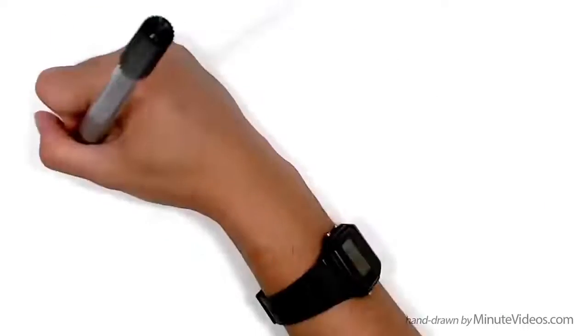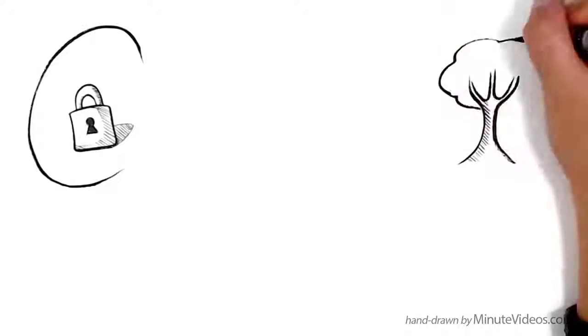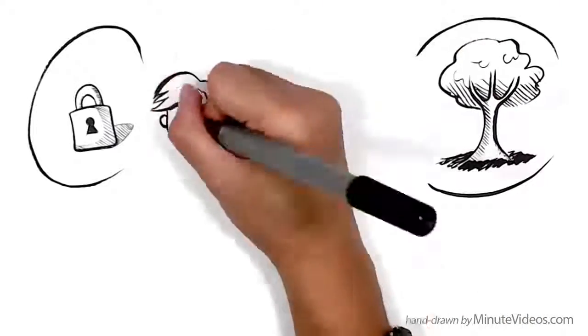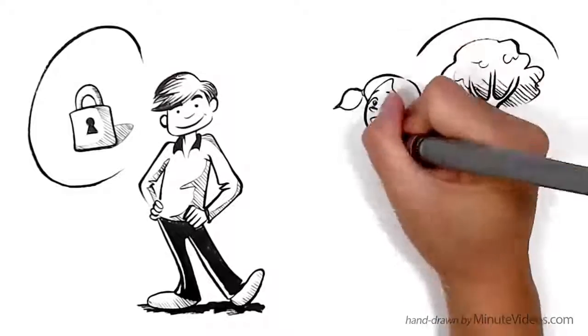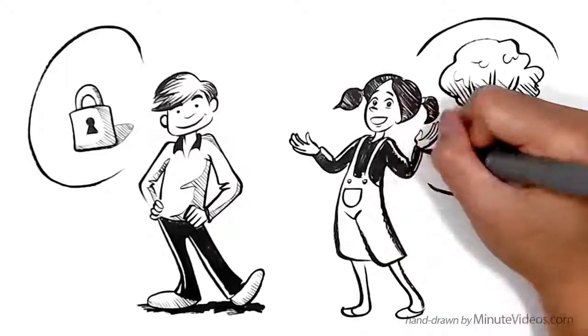To illustrate the difference in everyday life, let's observe two imaginary kids. Jay thinks you've either got it or you haven't. Ann knows that she can learn anything if she wants it enough.